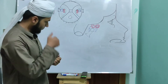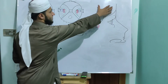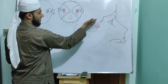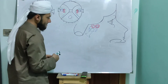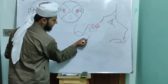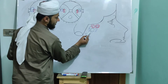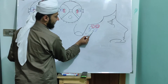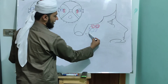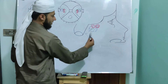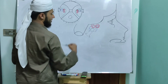Now we go to the lateral view. From this lateral view, this is the anterior cranial fossa, this is the middle cranial fossa, this is the posterior cranial fossa, and this is the foramen magnum. This is the external ear — the external auditory meatus. This is the tympanic membrane. This is the external ear, then the middle ear, and then immediately the internal ear.